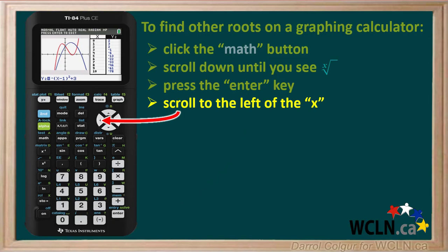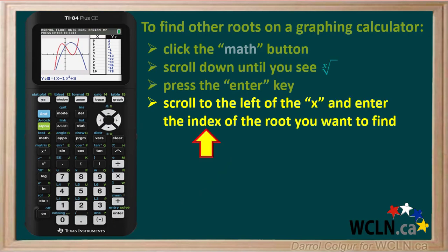Use the left scrolling key to scroll to the left of X. And enter the index of the root you want to find. If you want to find the fourth root, enter 4. If you want to find the fifth root, enter 5, etc.